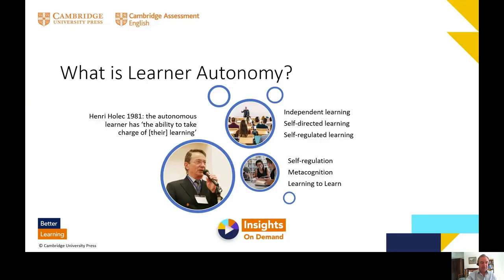Let's start by clarifying what we mean by learner autonomy. I think this term was first coined by Henri Olek in 1981. He said that the autonomous learner was one who has the ability to take charge of their learning. So it's about taking control and taking responsibility for your own learning as a learner.